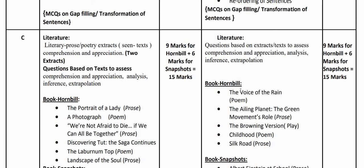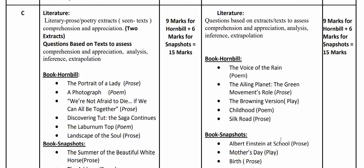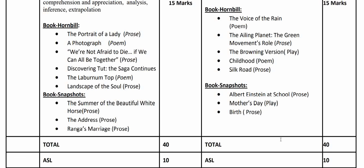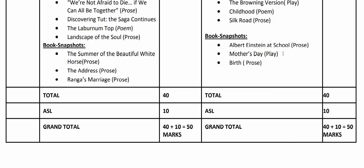From Hornbill, the Term 2 lessons include: 'The Voice of the Rain' (poem), 'The Ailing Planet: The Green Movements' Role' (prose), 'The Browning Version' (play), 'Childhood' (poem), and 'Silk Road' (prose). From Snapshots: 'Albert Einstein at School' (prose), 'Mother's Day' (play), and 'Birth' (prose). The weightage is 40 marks for the written paper and 10 marks for assessment of speaking and listening, totaling 50 marks for Term 2.